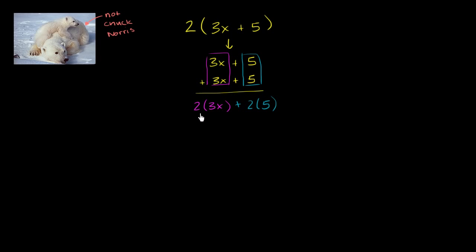But you might say, hey Sal, isn't this just the distributive property that I know from arithmetic? I've essentially just distributed the 2: 2 times 3x plus 2 times 5. And I would tell you yes, it is. And the whole reason why I'm doing this is just to show you that it is exactly what you already know.